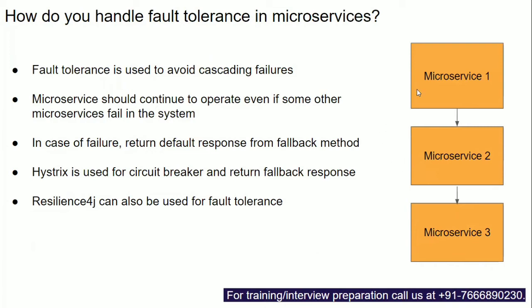This cascading failure is not good — if one portion of your application is down, it shouldn't impact other portions. To handle this, we make our microservices fault tolerant using frameworks like Hystrix for circuit breaking. If microservice 3 is down, Hystrix will return a default response to microservice 2, so we get at least some response rather than a failure.